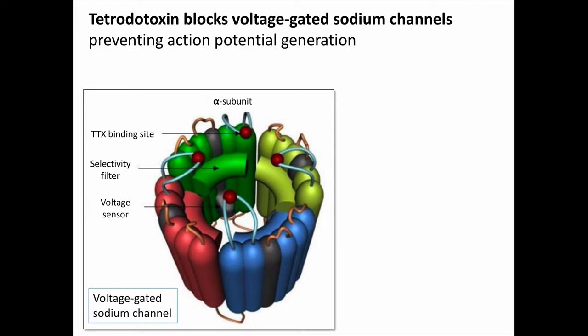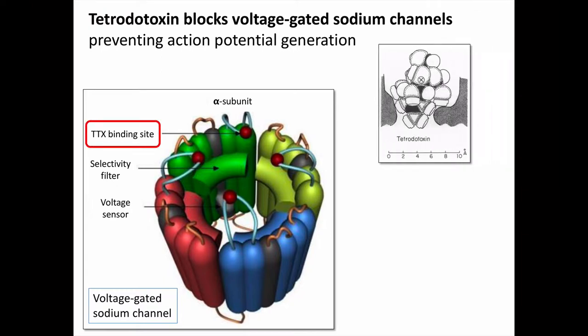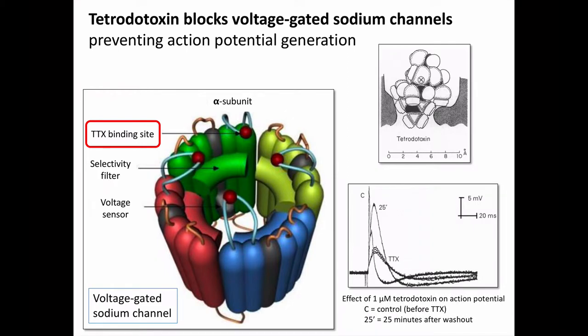Tetrodotoxin's mechanism of action is that it blocks the fast voltage-gated sodium channels responsible for creating the neuronal action potential. Here we see a model of the voltage-gated sodium channel and the tetrodotoxin binding site. The toxin binds, and it's bulky enough that it physically blocks the channel so that sodium can't pass through to depolarize the cell and produce an action potential. On the lower right, we see the results of an experiment with tetrodotoxin. The line labeled C for control shows a normal spike of a neuron depolarizing. The TTX line shows a great reduction in depolarization caused by a 1 micromolar concentration of tetrodotoxin, blocking most of the sodium ion flux through the channel, so this neuron does not meet the threshold to produce an action potential.